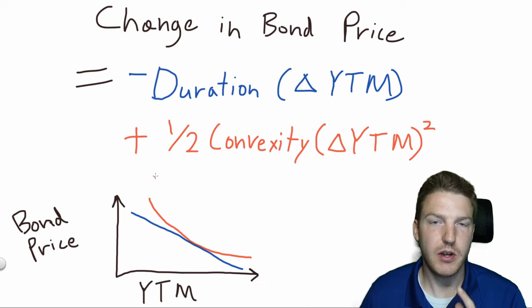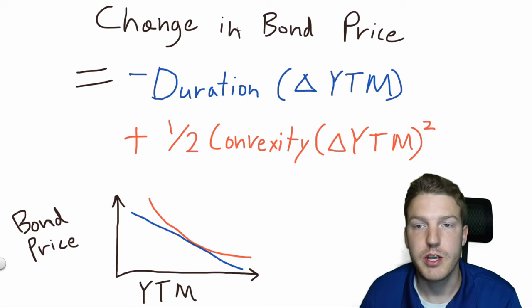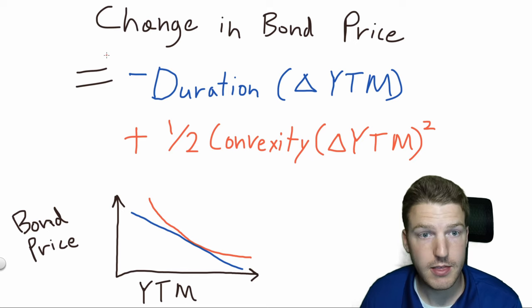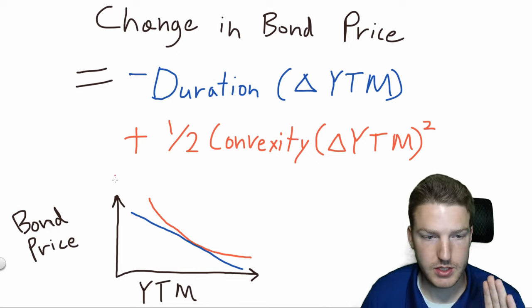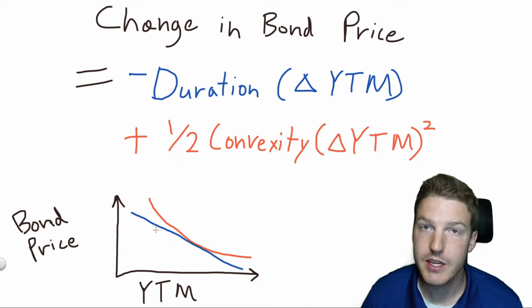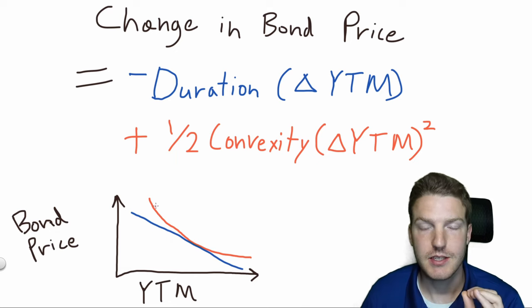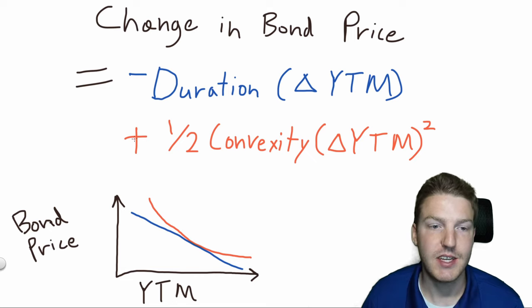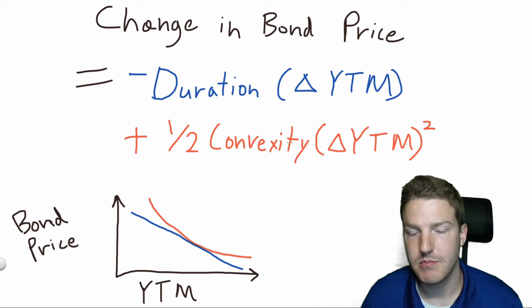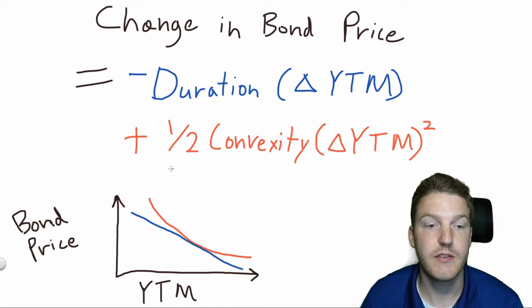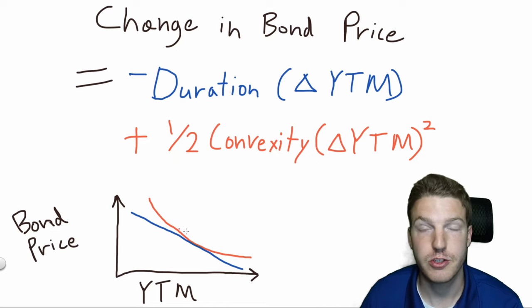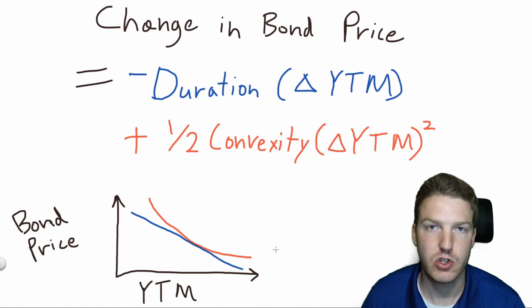Now this is where we put it all together, the formula for the approximate change in bond price. So we find that it equals the negative duration multiplied by the change in yield to maturity. If we just stop there, we would have this blue line, which would represent a linear relationship. But to get a more accurate estimate, we have to add one half times convexity times the change to yield to maturity, squared, which gives us this more accurate orange curved line for the change in the price of a bond as yield to maturity changes.